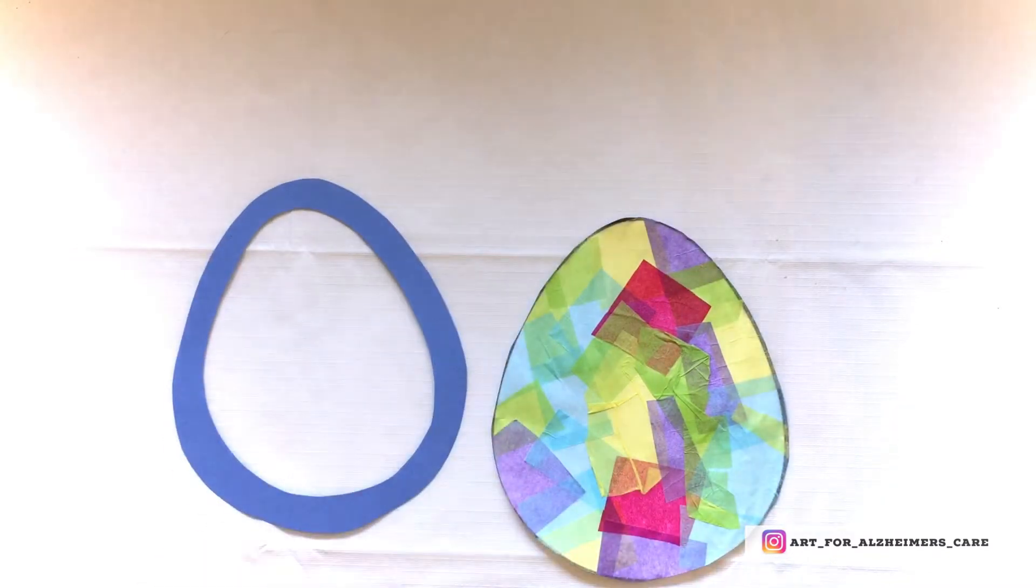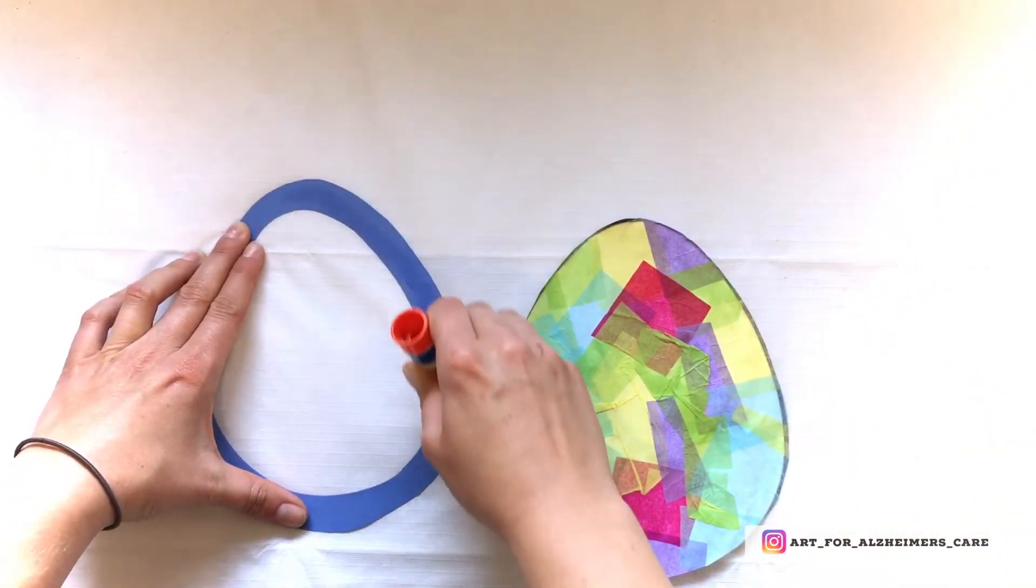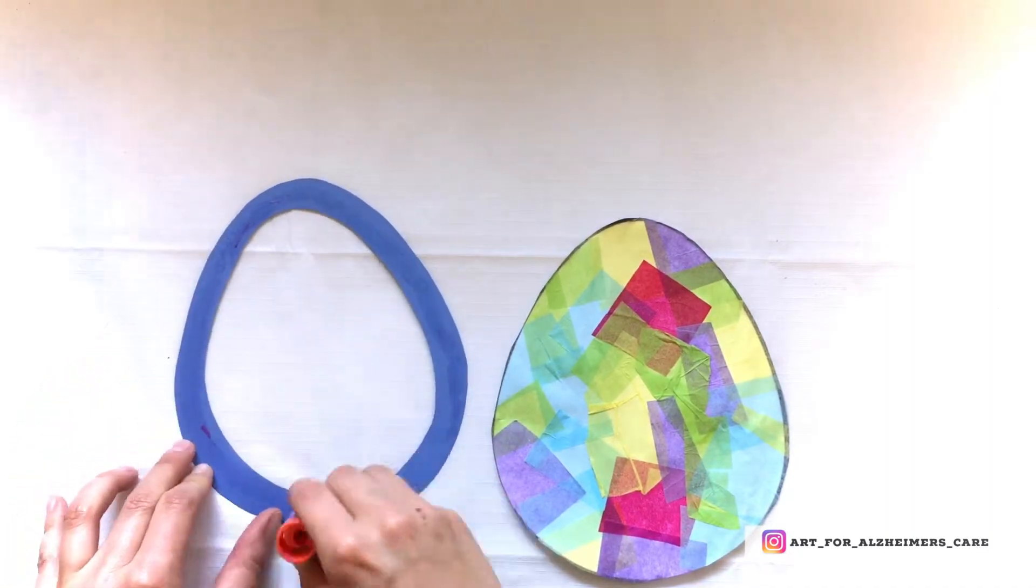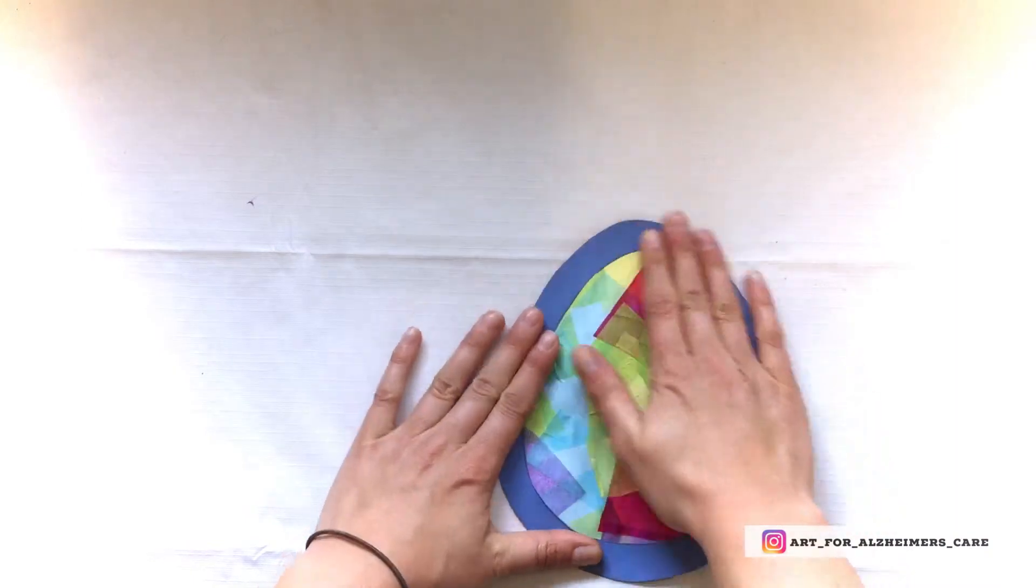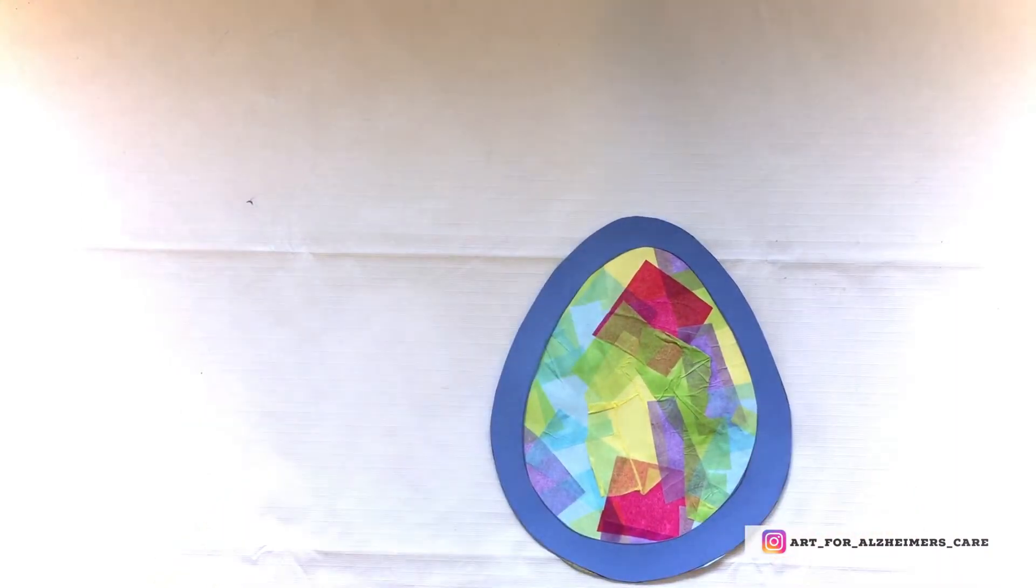So I've got a glue stick here. I'm just going to put some glue on the back of the border and then I'm going to stick it onto the egg. There you go, a nice colorful Easter egg.